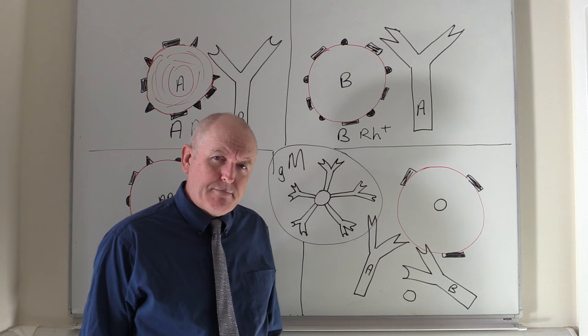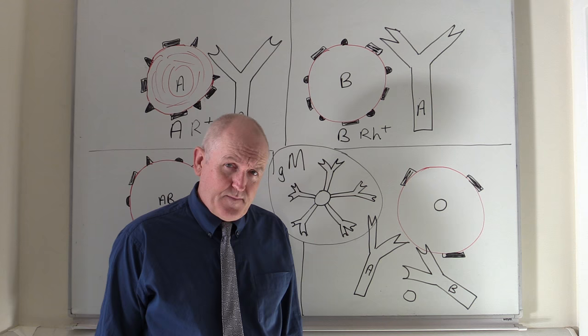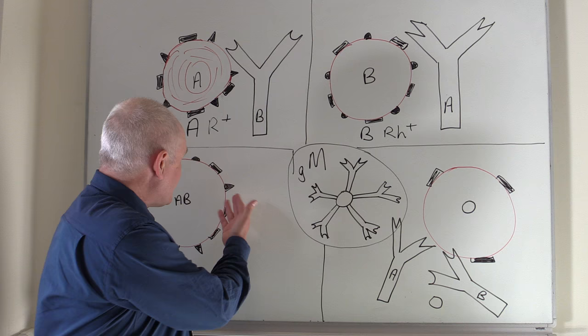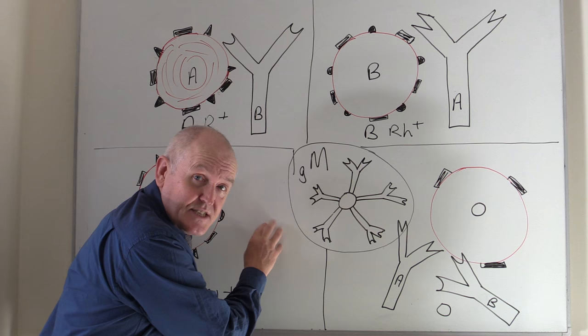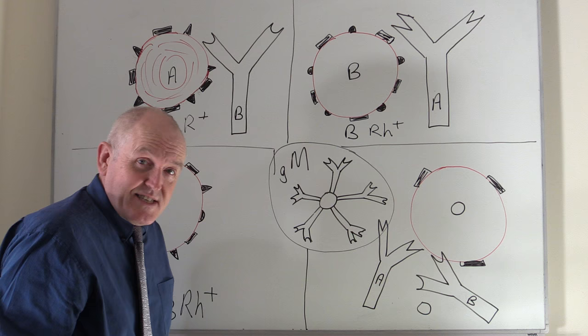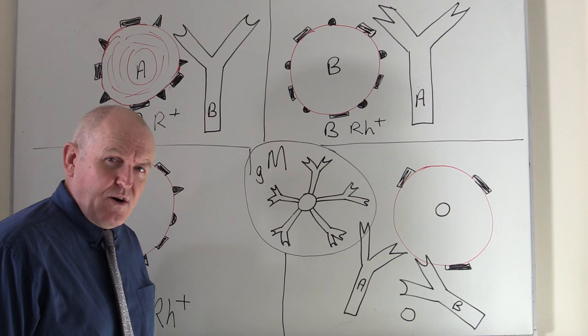In the ABO system, there are naturally occurring antibodies in the plasma. However, with the rhesus factor, there are no naturally occurring antibodies. If someone is rhesus negative, there will be no rhesus factor antibodies — no rhesus factor immunoglobulins — in the plasma. Whether someone is rhesus positive or rhesus negative, there still will be no rhesus factor antibodies in the plasma. They are not naturally occurring.